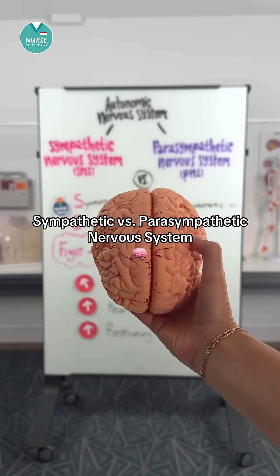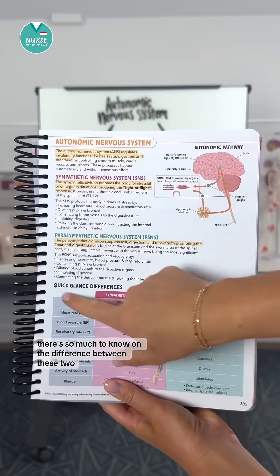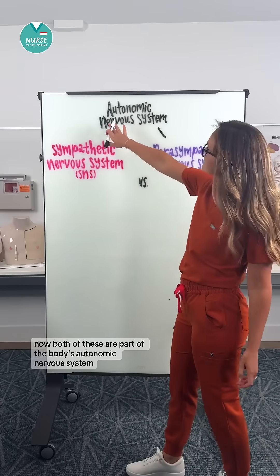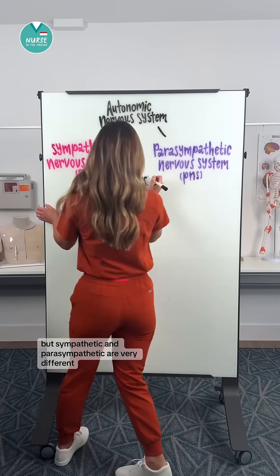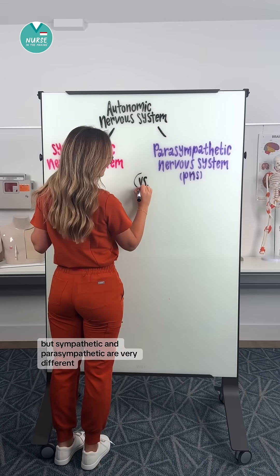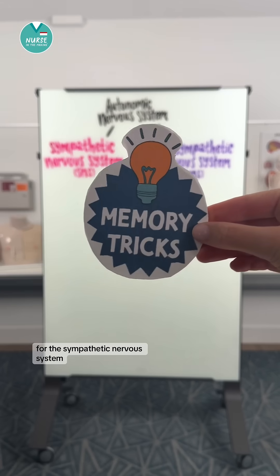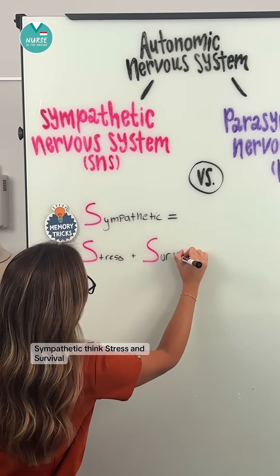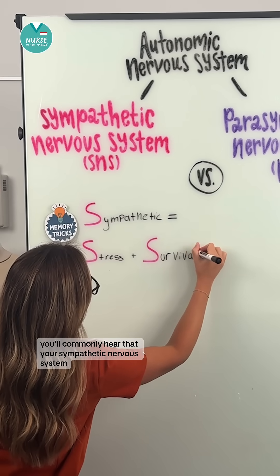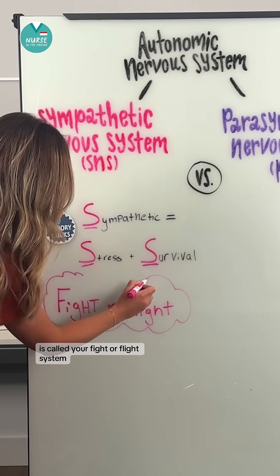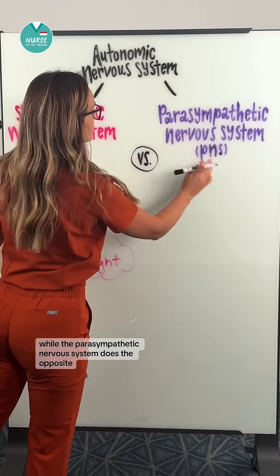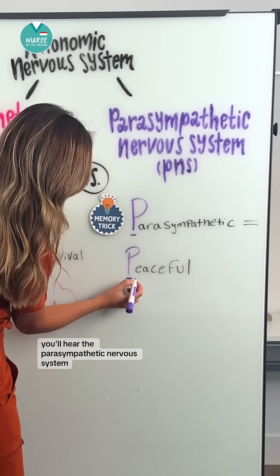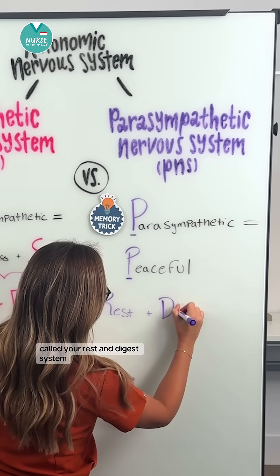Let's talk about the sympathetic versus the parasympathetic nervous system. Both of these are part of the body's autonomic nervous system. For the sympathetic nervous system, you can remember this with the memory trick: sympathetic — think stress and survival. You'll commonly hear it called the fight-or-flight system. For the parasympathetic nervous system, think peaceful — it's called the rest-and-digest system.